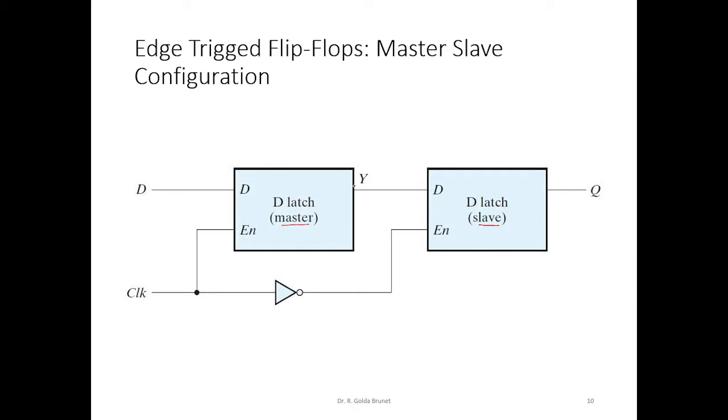The output of the master is connected to the input of the slave D latch, and this is the output of the flip-flop that is observed by the user. This Q represents the state of the flip-flop, and this is our external input.